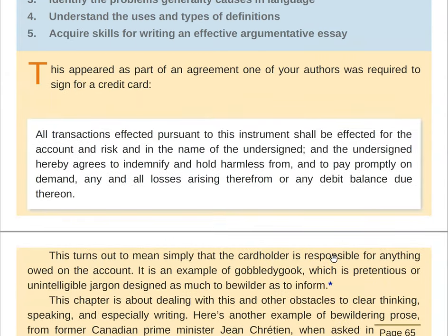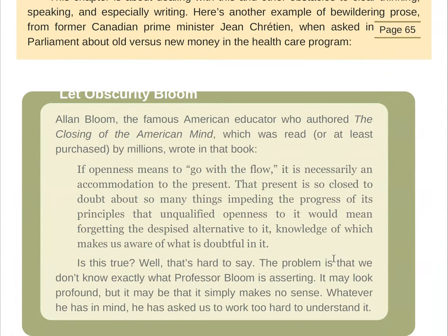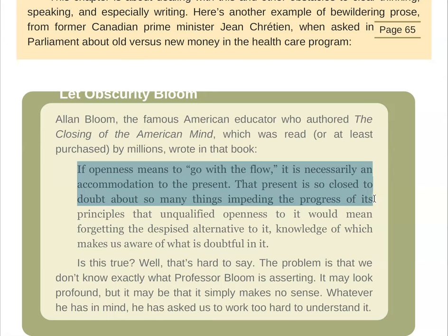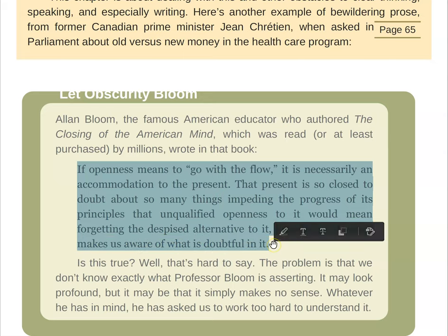The first thing I want us to look at is this sentence: 'If openness means to go with the flow, it is necessarily an accommodation to the present. The present is so closed to doubt about so many things impeding the progress of its principles that unqualified openness to it would mean forgetting the despised alternative to it, knowledge of which makes us aware of what is doubtful in it.' What does this say? My reading wasn't great because I don't know what it says.